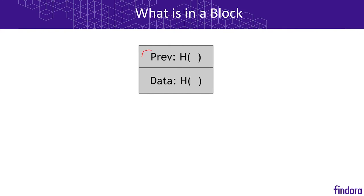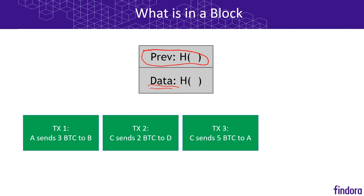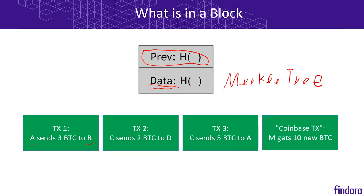Now let's discuss what is inside a block. We already talked about the previous block hash, but now let's talk about the data stored inside a block. In Bitcoin this data consists of transactions — Alice might send money to Bob, or Charlie to Doris. In the block header we store the hash of all these transactions using a special kind of hash called a Merkle tree. There is also a special Coinbase transaction where the creator of the block — the so-called miner — gets some newly minted Bitcoin.